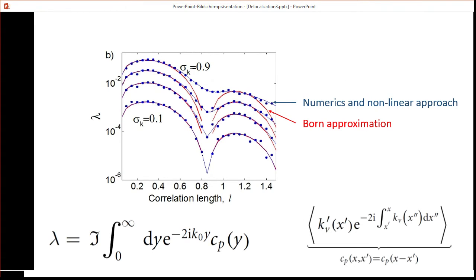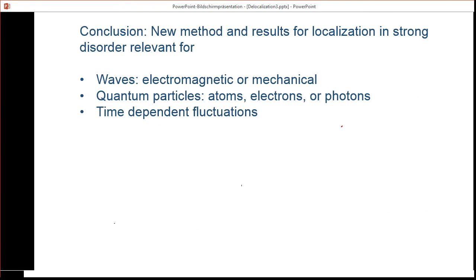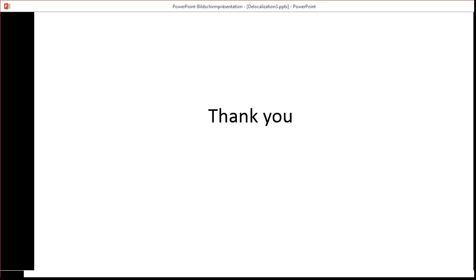So to conclude, we have found a new way to calculate the Lyapunov exponent for any disorder strengths. Basically we just have to evaluate this correlation function c_p(x). This has important implications for many systems, such as electromagnetic waves or quantum particles, and explains why localization is sometimes very difficult to observe, especially at very small correlation lengths. So with this, I hope you will be interested in reading our paper for more details. Thank you for your attention.